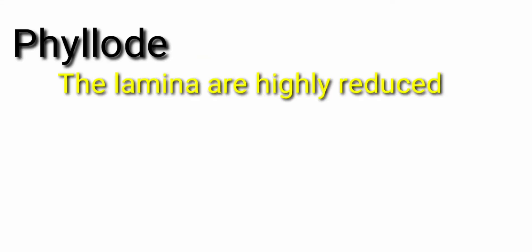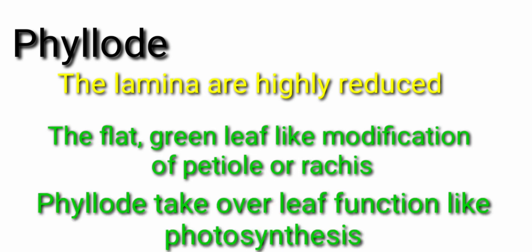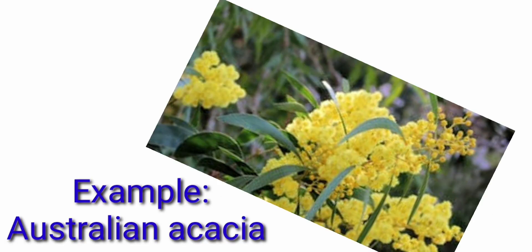Next one is the phyllode which is another form of leaf modification. Here, the leaf is completely reduced or highly reduced. So the petiole or rachis gets modified into flat, greenish leaf-like structure to carry out the functions which are carried out by the leaf like photosynthesis. Example: Australian acacia.